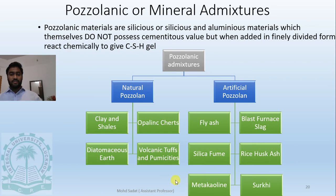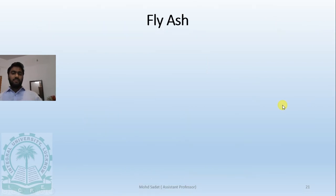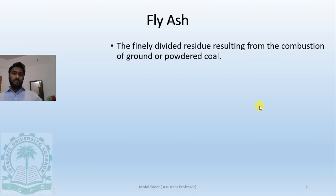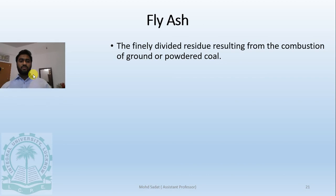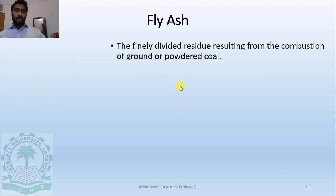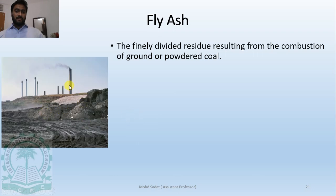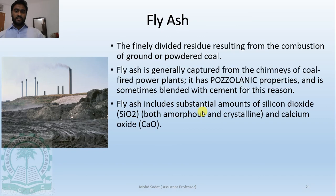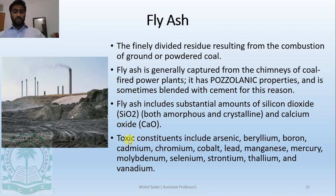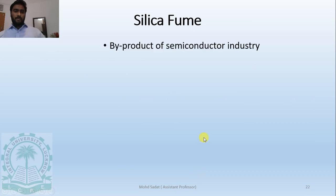Fly ash is the residue obtained from coal-fired power plants — generally captured from chimneys. It includes a substantial amount of silicon dioxide but also contains some toxic chemicals such as arsenic, boron, and cadmium.